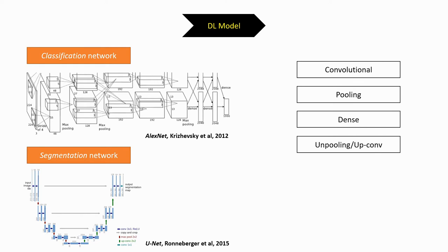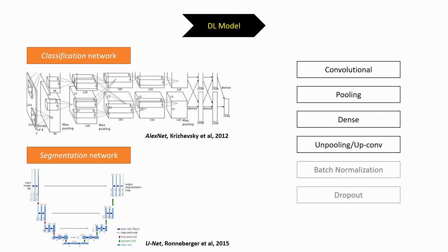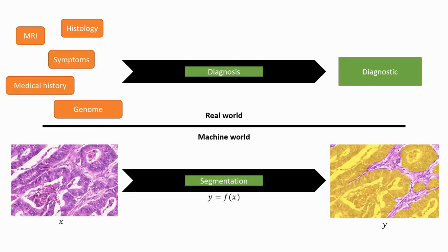There are other types of layers, for instance regularization layers such as batch normalization or dropout, but that's getting out of scope for this video. The main point is that the same basic components are typically used in many different architectures, and the specificity of a given network is often in how these layers are arranged and combined.